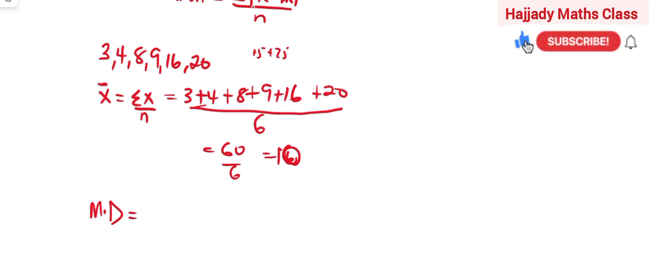That is the positive value of my x minus x̄. So my x now is |3 minus 10|. The next observation, which is |4 minus 10|,